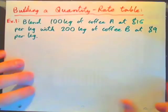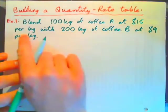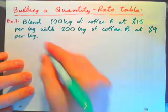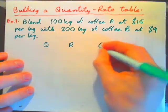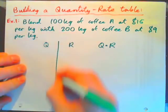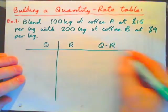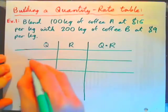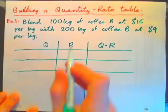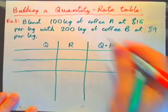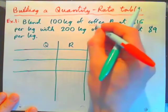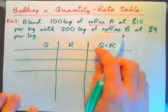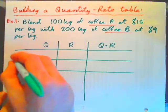Okay, blend 100 kilograms of coffee A at $15 per kilogram with 200 kilograms of coffee B at $9 per kilogram. So we're going to set up a quantity-rate table, not because we can't understand this right now, but because when we get to more difficult problems, we'll understand what all these numbers in the table mean. So we have two types of coffee, coffee A and coffee B. Coffee A from Nicaragua and coffee B from Ghana in Africa. So here's coffee A, here's coffee B.